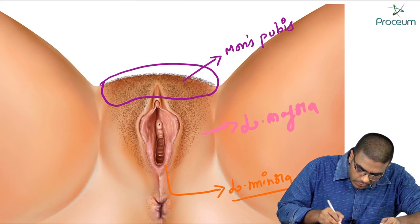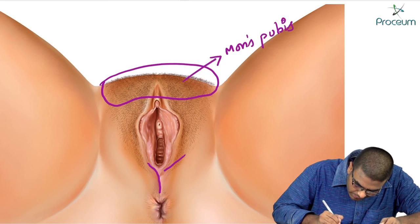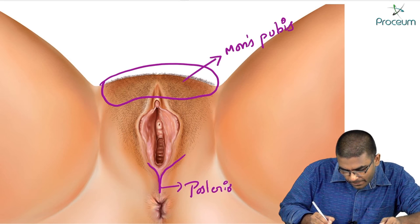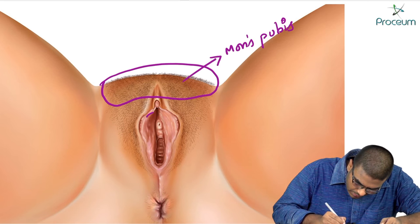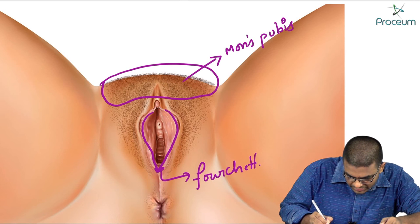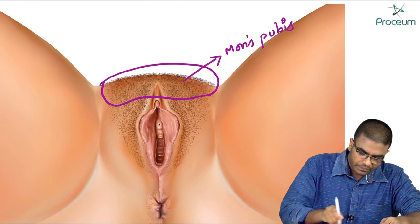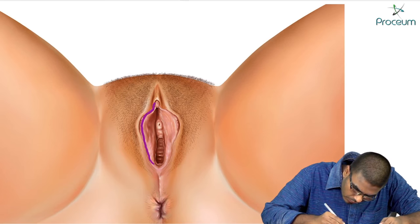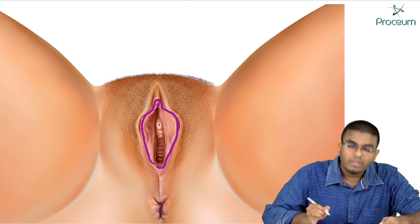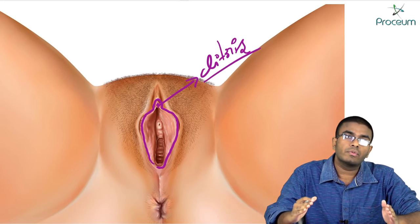The labia majora unite posteriorly and form a structure known as the posterior commissure. In the same way, the labia minora also meet posteriorly and form a structure known as the fourchette. The posterior commissure is due to the fusion of the labia majora. The labia minora also fuse anteriorly over an erectile body.